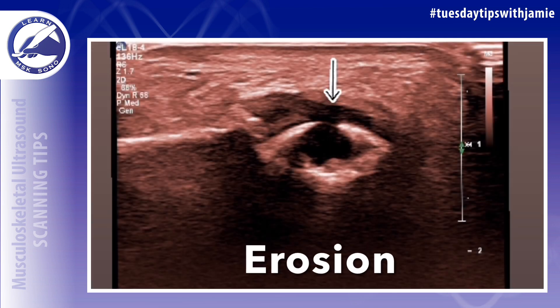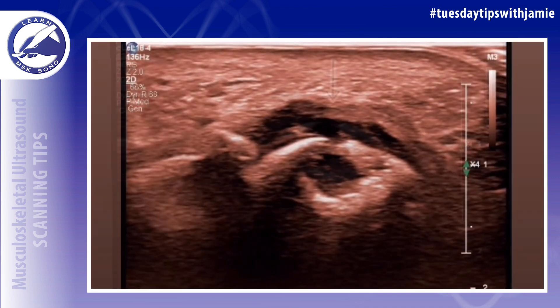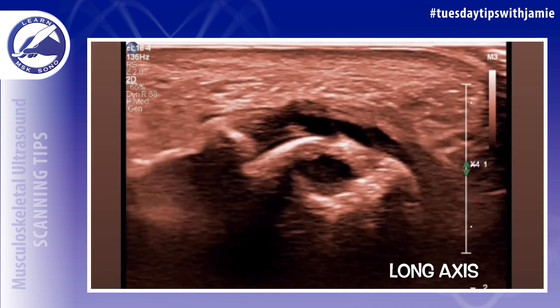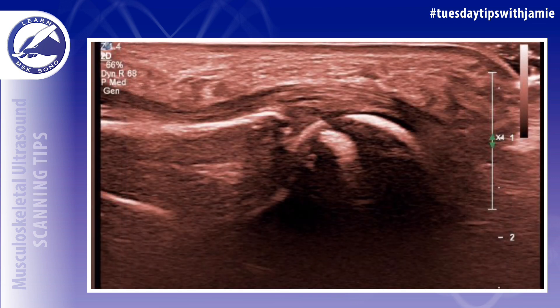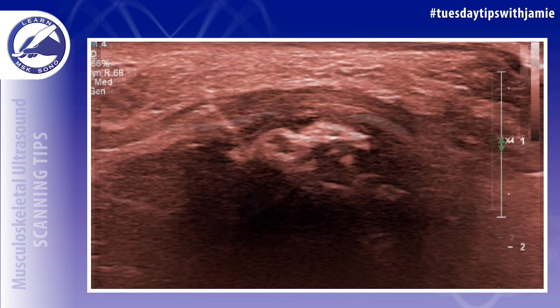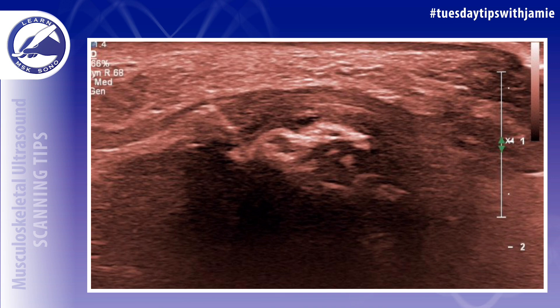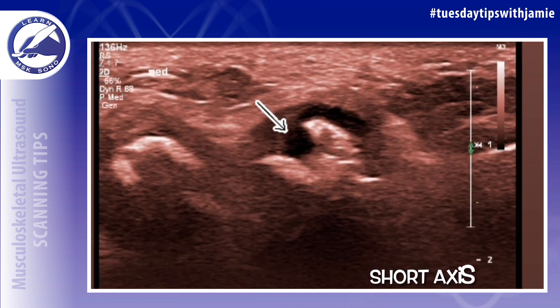Erosions are areas of bone loss that appear to indent the surface of the bone. These are caused by inflammatory conditions such as rheumatoid and psoriatic arthritis, or juvenile idiopathic arthritis in children. Inflammatory arthritis also causes synovial hypertrophy, which can lead to damage of the cartilage and may have tendon sheath involvement.